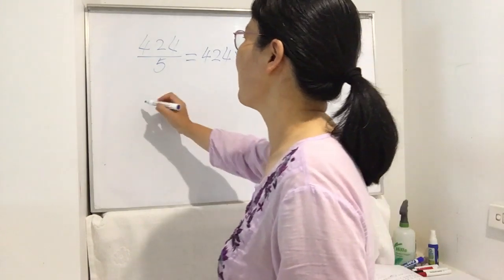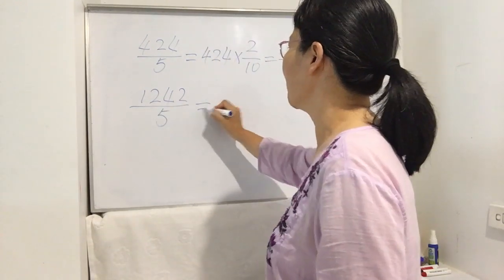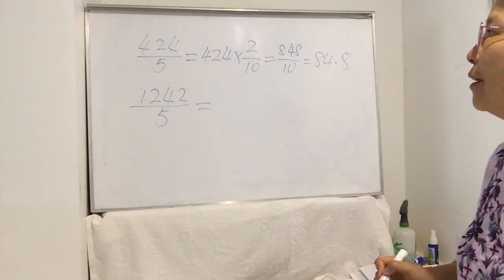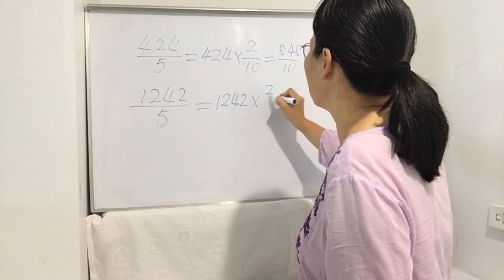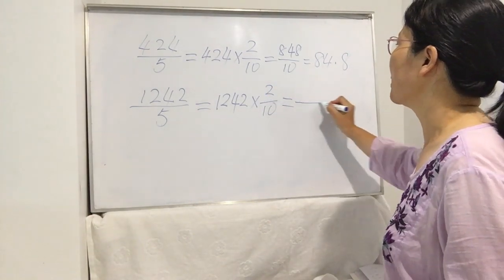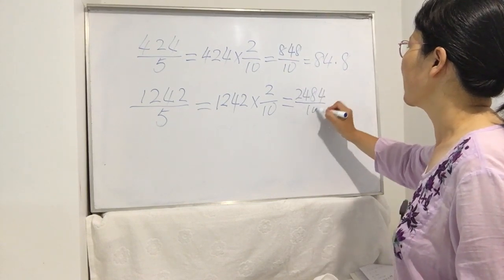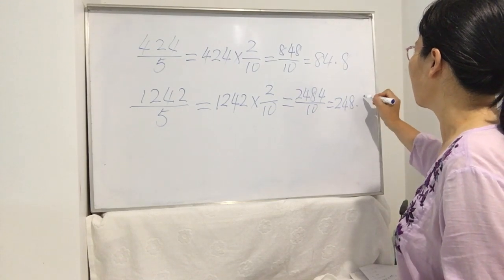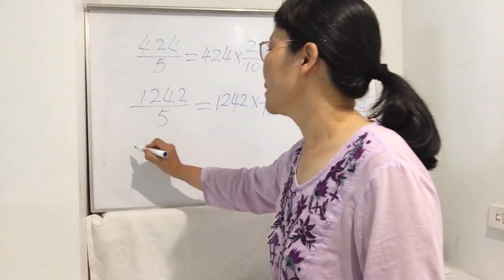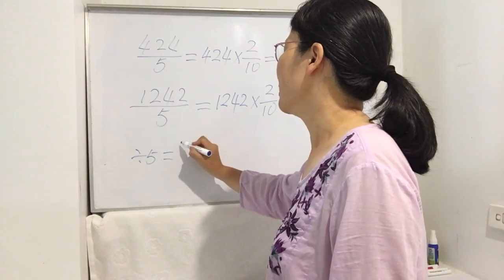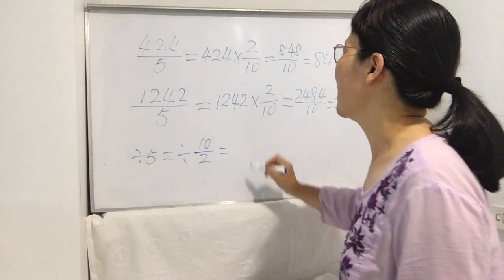Now you try one exercise: 1242 divided by 5. Same technique — 1242 times 2 divided by 10. Times 2 gives 2484, divided by 10 gives 248.4. So in the future, any number divided by 5, use times 2 divided by 10. That's the trick.